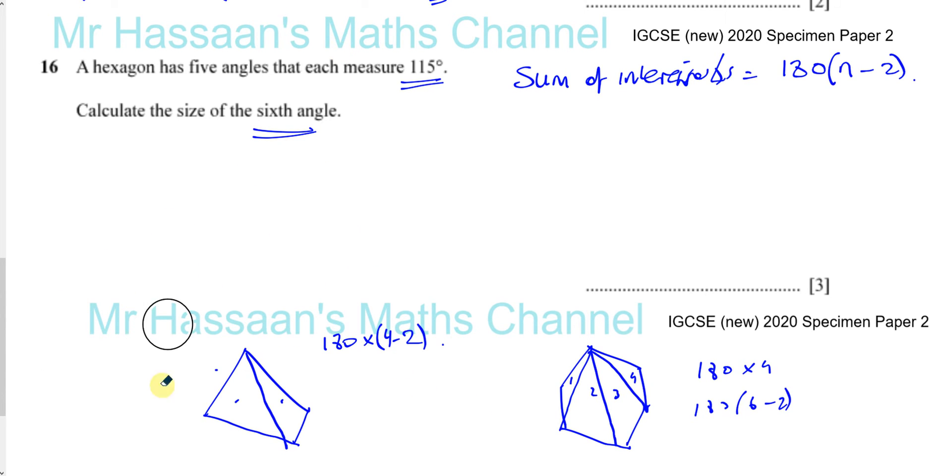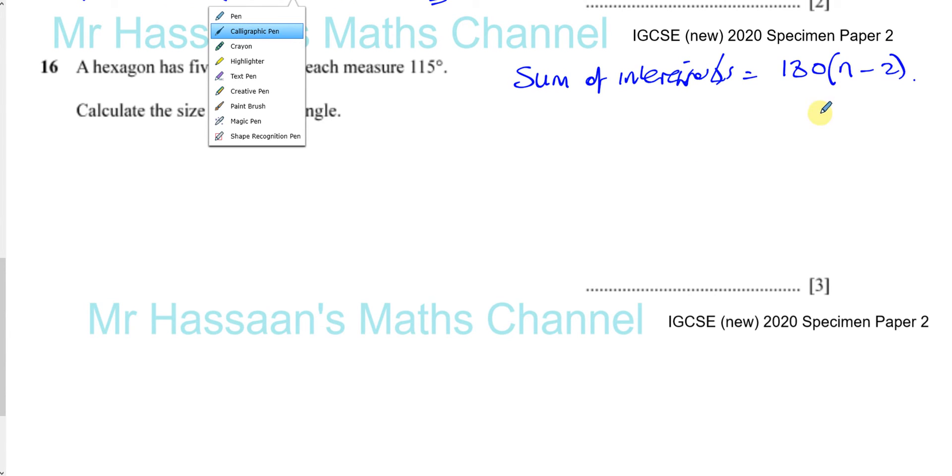That's just a little background to where this formula comes from. Again, you know, memorizing formula is fine, however, I really do prefer that students understand where these formulae come from. So I normally, in my lessons, I have like these kind of investigations that students do where they discover these formulae for themselves. But anyway, that's where the formula comes from, 180 times the number of triangles in that polygon, and the number of triangles is always going to be two less than the number of sides that the polygon has.